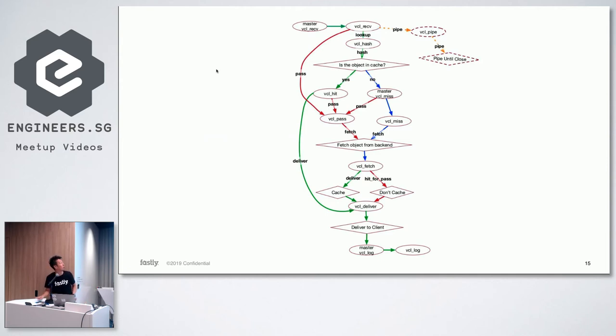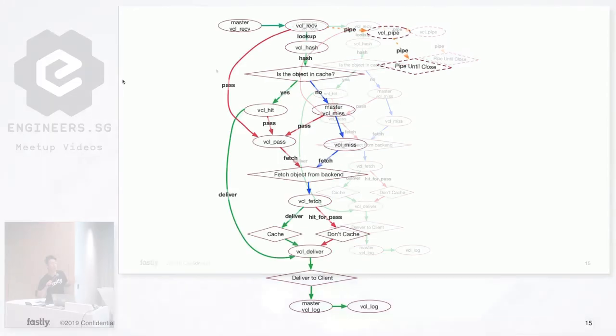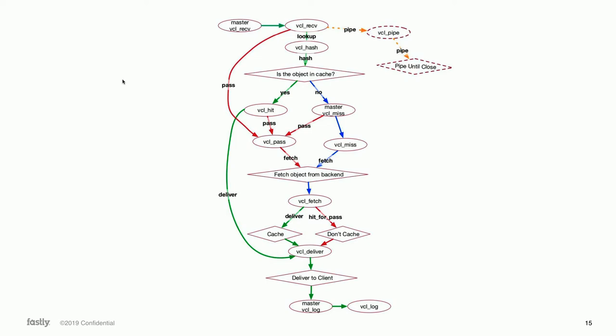Before diving into the actual code, here is the Varnish request workflow. Varnish has a state machine with subroutines. Starting from vcl_recv — which runs when our server receives the request from the end user — the server checks if the object is already in cache or not. Depending on the result, it goes to cache hit or cache miss. vcl_miss means there is no cached object for the request, so it fetches from origin. Then vcl_fetch and vcl_deliver, which delivers the actual object to the end user, followed by sending the log.